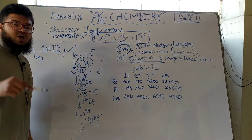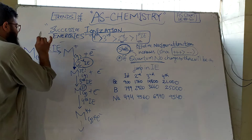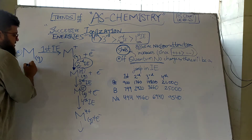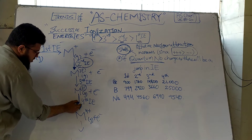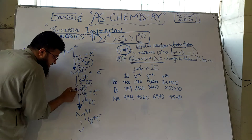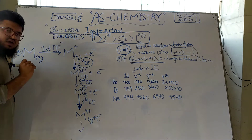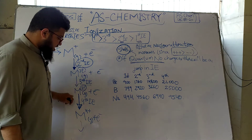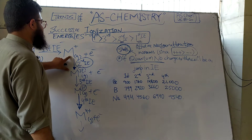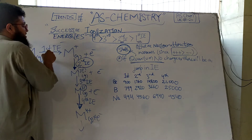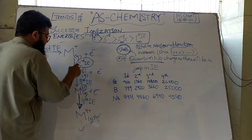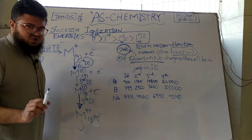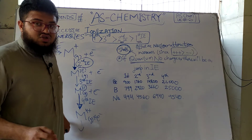An important point: the fourth ionization energy is just the energy of that particular step — it is not the sum or addition of all the previous ionization energies. Similarly, the second ionization energy does not include the first; it is just the additional energy given to that positively charged ion at that step.